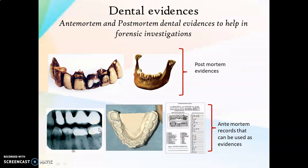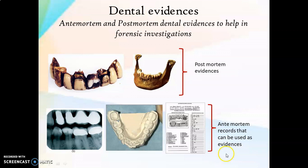Identification of deceased individuals using teeth is possible even if the remnants are skeletonized, because teeth can resist decomposition for a very long time. The post-mortem evidences that can be collected usually include the dentition, or even fixed or partial dentures, or porcelain or metal crowns, because such materials also resist decomposition like teeth. Ante-mortem records of the suspected individual can be easily procured from the dentist, and these include the OP chart, cast, and radiograph.